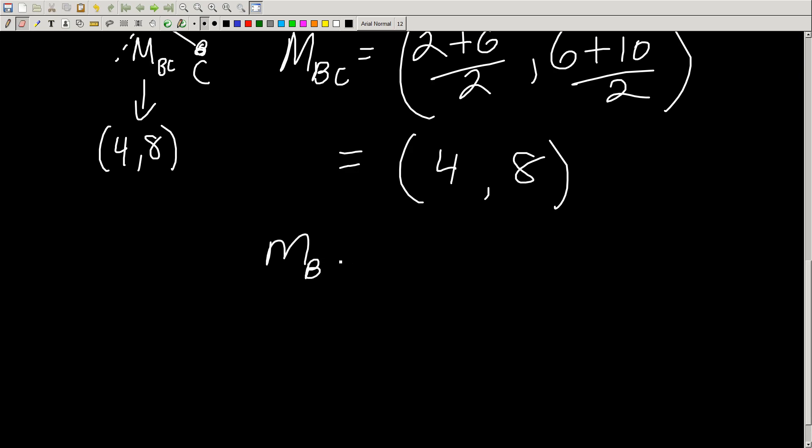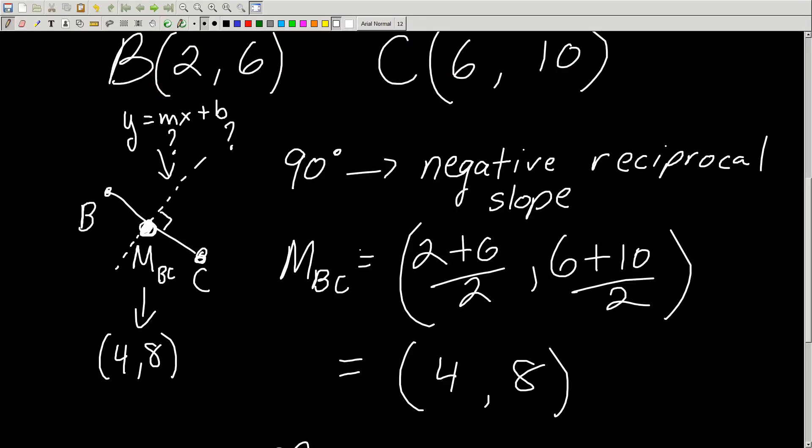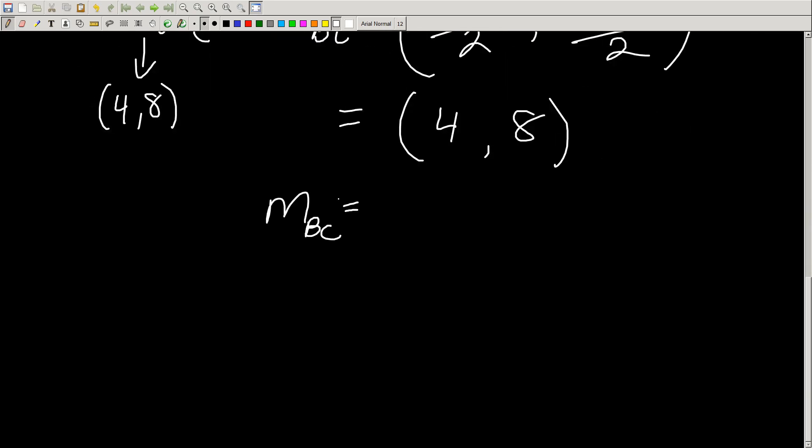How do you find that? You go 10 minus 6 over 6 minus 2, y2 minus y1, 10 minus 6 over 6 minus 2, and you happen to get 4 over 4, which is 1.